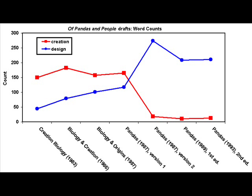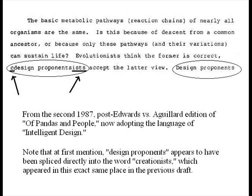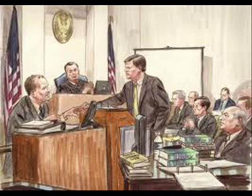An amazing thing occurs just after the Edwards v. Aguilard decision is handed down later in 1987, however. The second edition of Pandas and People is drafted just after the court decision that makes creation science unconstitutional, and the word creationism all but disappears from the second and all subsequent editions of the book. Of Pandas and People is the same book as the first edition of 1983's Creation Biology. This fact played a key role in the Kitzmiller v. Dover case, which demonstrated to the public that ID was no different than creationism in practice.